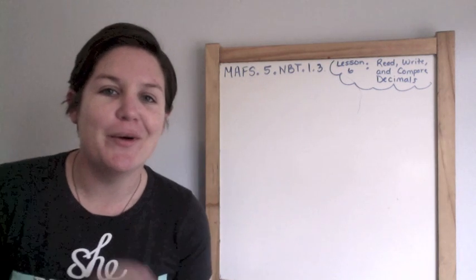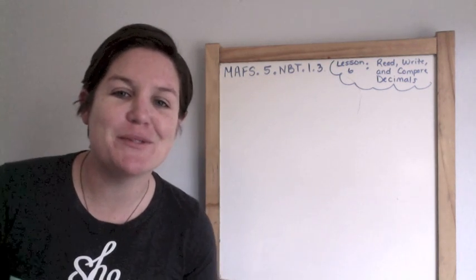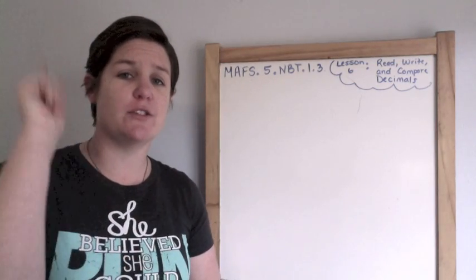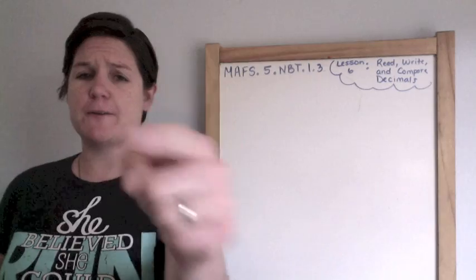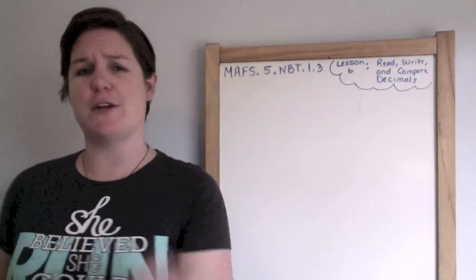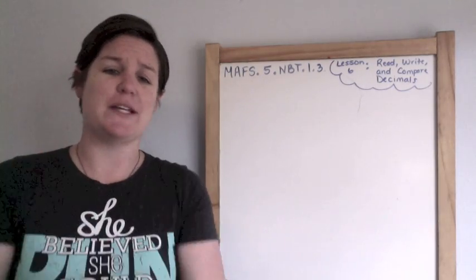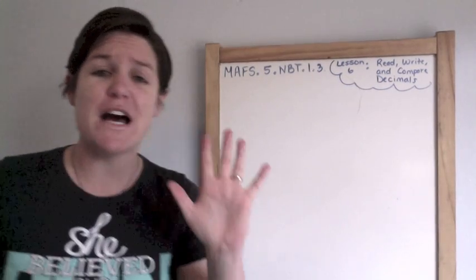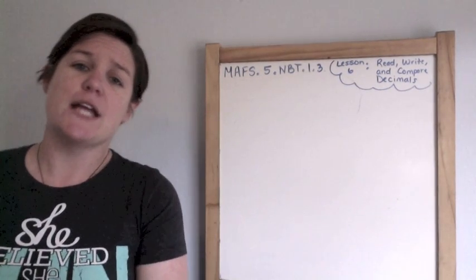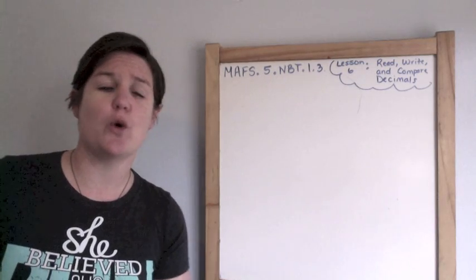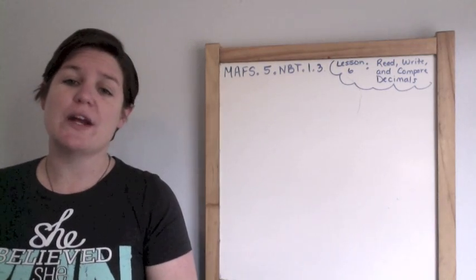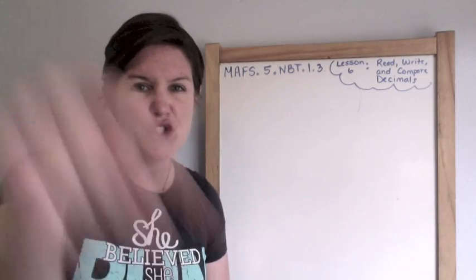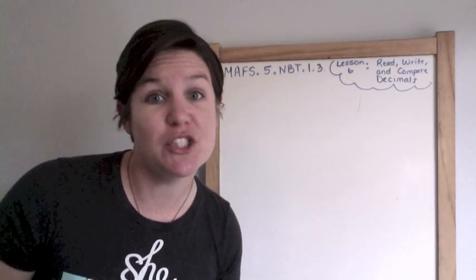Hey everybody! Welcome to another episode of How to Pass the Math FSA. This is the fifth grade edition, so if you are a fifth grader, a fifth grade teacher, a parent of a fifth grader, or a fifth grade tutor, you are in the right place. Today our standard is MAFS.5.NBT.1.1 — that's a fancy code for reading, writing, and comparing decimals, which is lesson six today. So let's get to it!